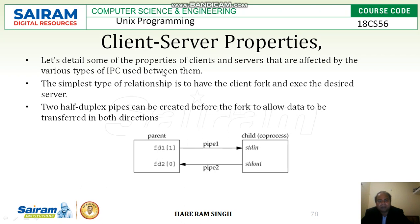Let us detail some of the properties of clients and servers that are affected by the various types of IPC used between them. Here we will discuss some properties of the client and server which will be used in the IPC, inter-process communication method. The simplest type of relationship is to have the client fork and execute the desired server.